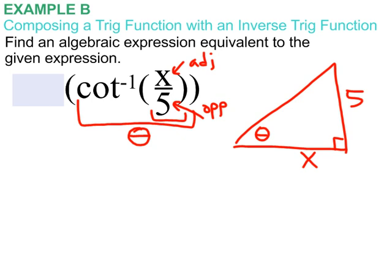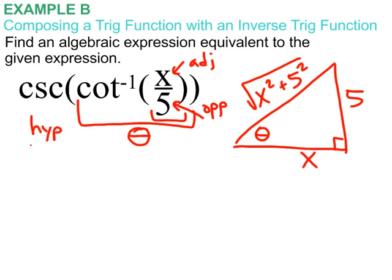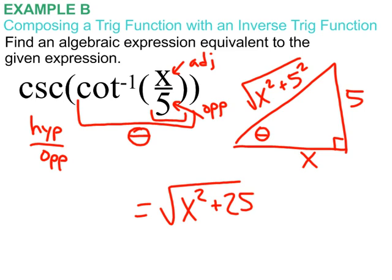You can anticipate what that hypotenuse is going to be. Pythagorean theorem again. It says x squared plus 5 squared, square rooted. Now I want to take the cosecant of that angle theta. The cosecant is hypotenuse over opposite. I look at my picture, and the hypotenuse over opposite is square root x squared plus 5 squared, or 25, over the opposite, which is 5. And that is our final answer.